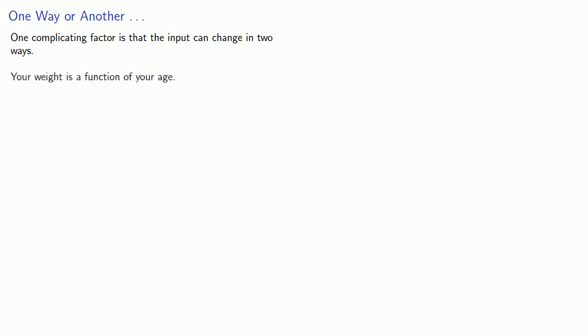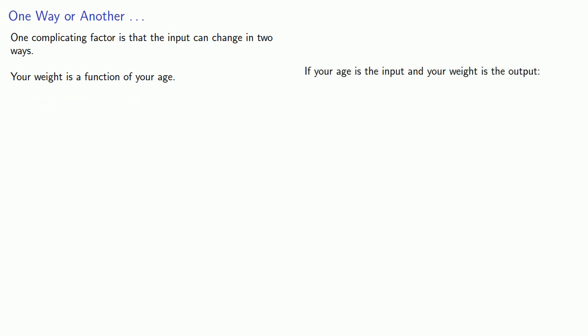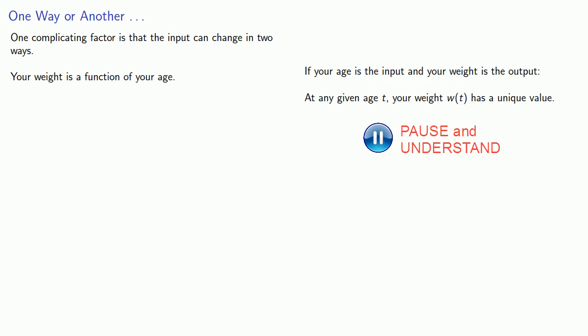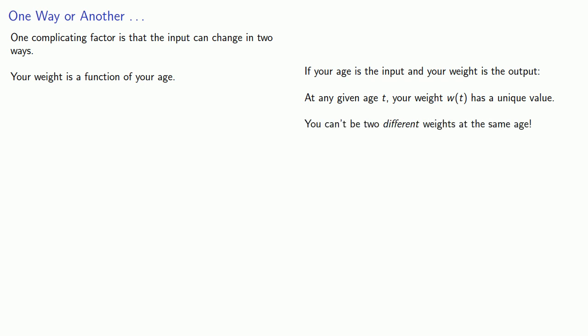For example, your weight is a function of your age. Let's verify that. If your age is the input and your weight is the output, at any given age t, your weight w of t has a unique value. That's because you can't be two different weights at the same age.